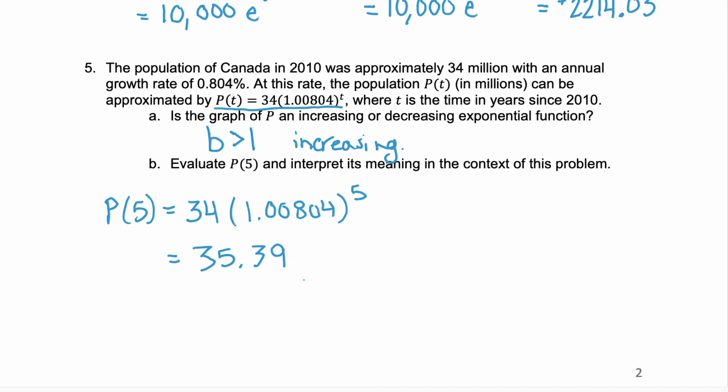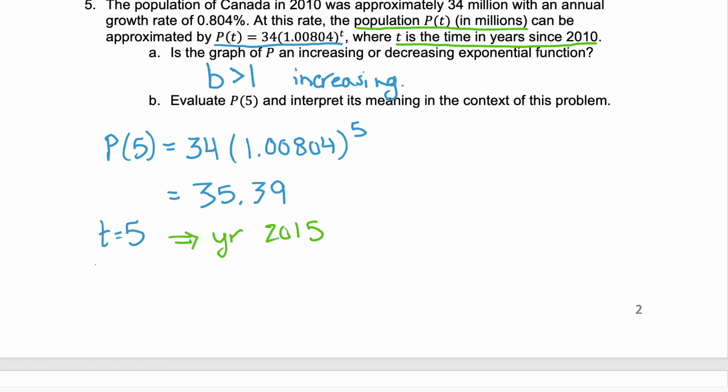Well, what does this mean? That's the interpret its meaning in the context of the problem. Well, P(5) is telling us that t = 5. And if you remember from above, t is the time in years since 2010. So t = 5 would be 5 years after 2010, so that would be the year 2015. And then our value P(t) is the population in millions. So our interpretation would be in 2015, the population of Canada was approximately 35 million. You have to pay attention to that unit of measurement. It's usually in parentheses.